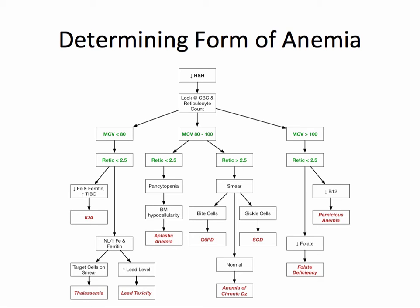The flow of this lecture is based on a conceptual algorithm where we begin with a low hemoglobin and hematocrit and then look at a CBC and reticulocyte count. As a component of the CBC, the mean corpuscular volume tells us the size of the red blood cell. An MCV less than 80 is microcytic, between 80 and 100 is normocytic, and greater than 100 is macrocytic. This algorithm offers a quick method for identifying different types of anemia in practice.